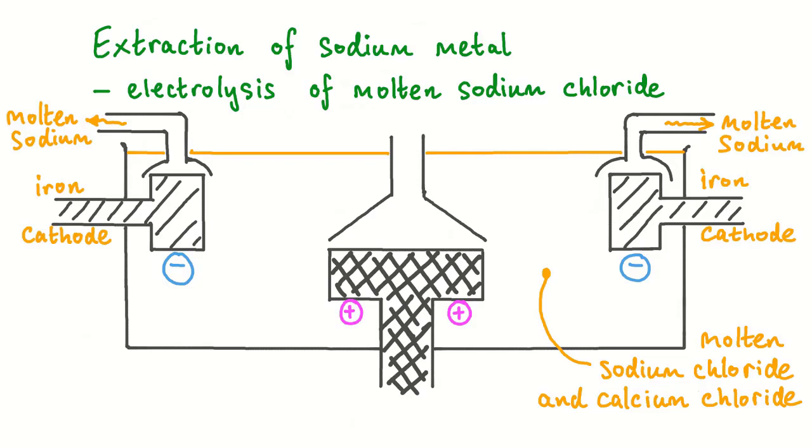Sodium is produced at the negative electrodes, or cathodes, in this cell. These cathodes are made from iron. The sodium is molten at the temperature of the cell. And as it's less dense than the molten sodium chloride and calcium chloride in the cell, it floats upwards and out of the cell.